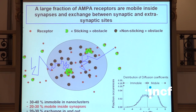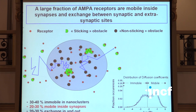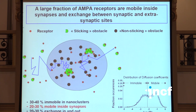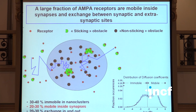So altogether, we are pretty convinced now that indeed you should see the PSD as a place where AMPA receptors are either highly clustered and immobile, or extremely mobile in between the clusters. We start to have some evidence that they do exchange in between those clusters and outside of the clusters. And in terms of proportions, on average it's about half of the receptors that are mobile, and half of them that are immobile.